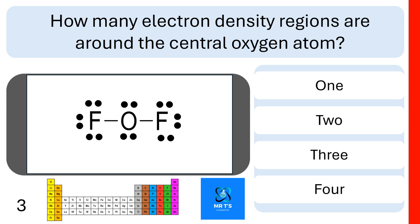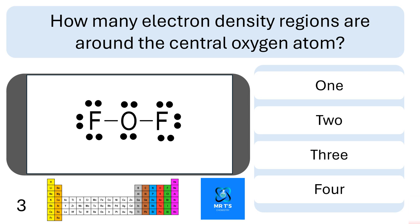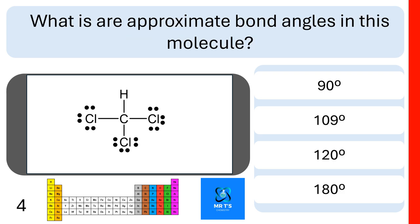Question three: how many electron density regions are there around the central oxygen atom? Is there one, two, three, or four? If you put four down, you're correct.